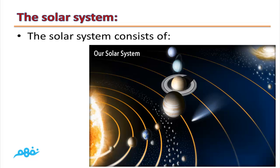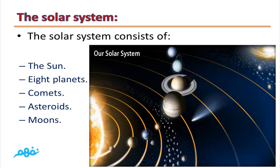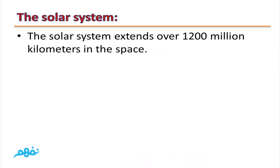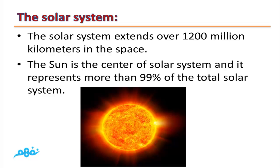The Solar System consists of the Sun, 8 planets, comets, asteroids, and moons. The Solar System extends over 1,200 million kilometers in space. The Sun is the center of the Solar System and represents more than 99% of the total Solar System mass.